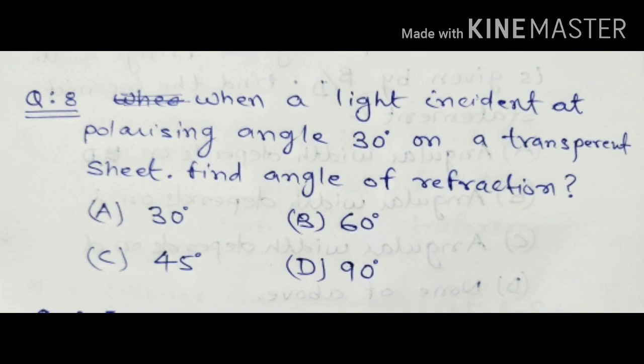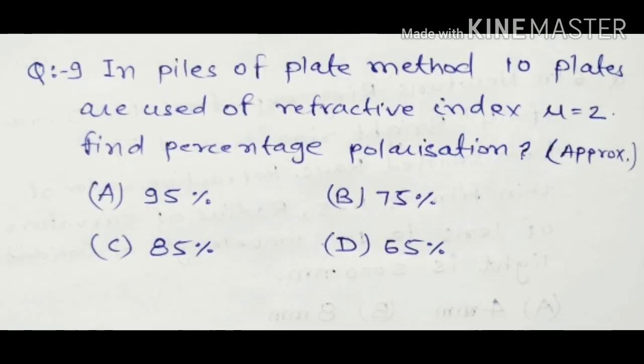Question number eight: when light is incident at a polarizing angle of 30 degrees on a transparent sheet, find the angle of refraction. You should know where this type of question comes from and how to solve it.